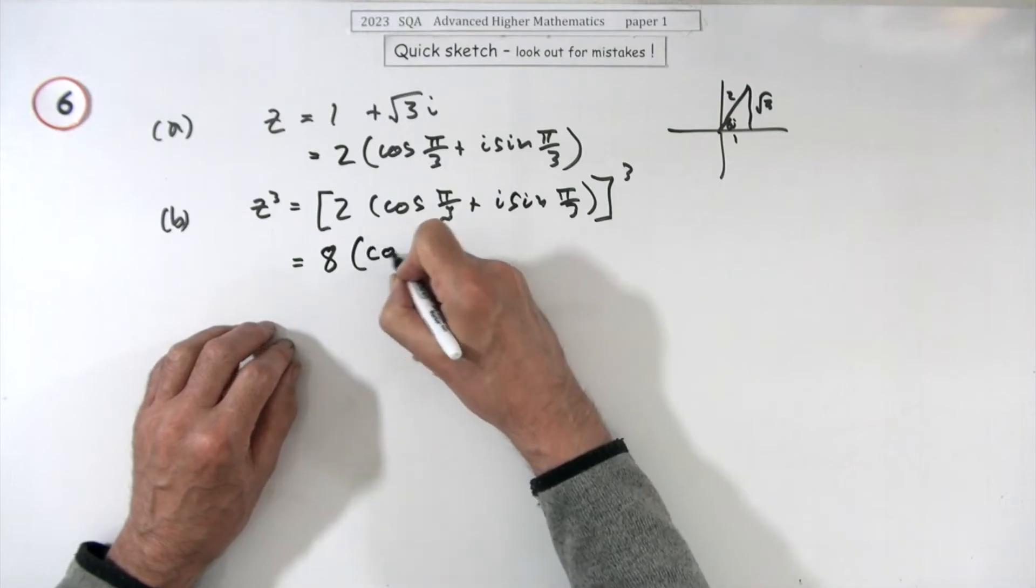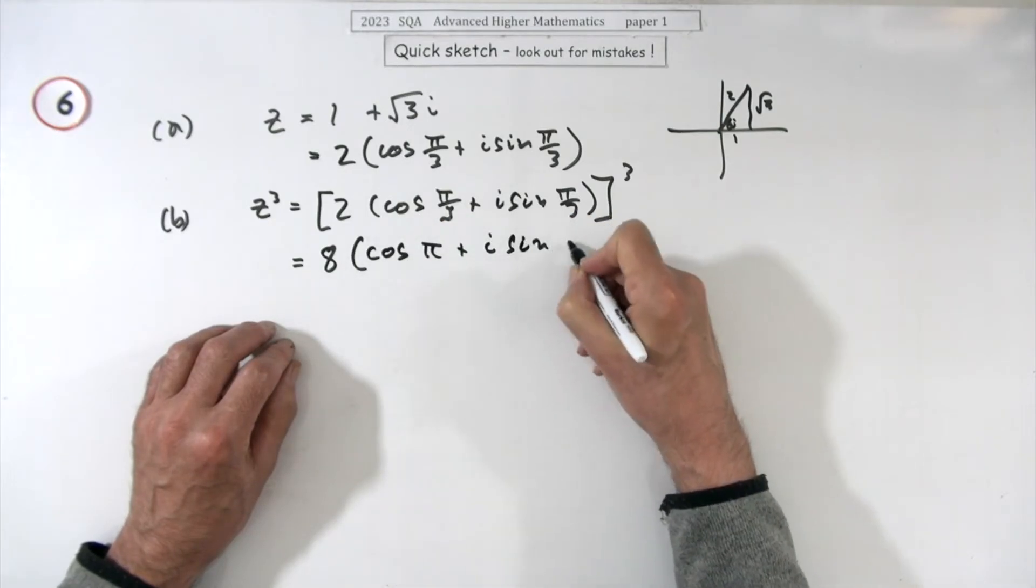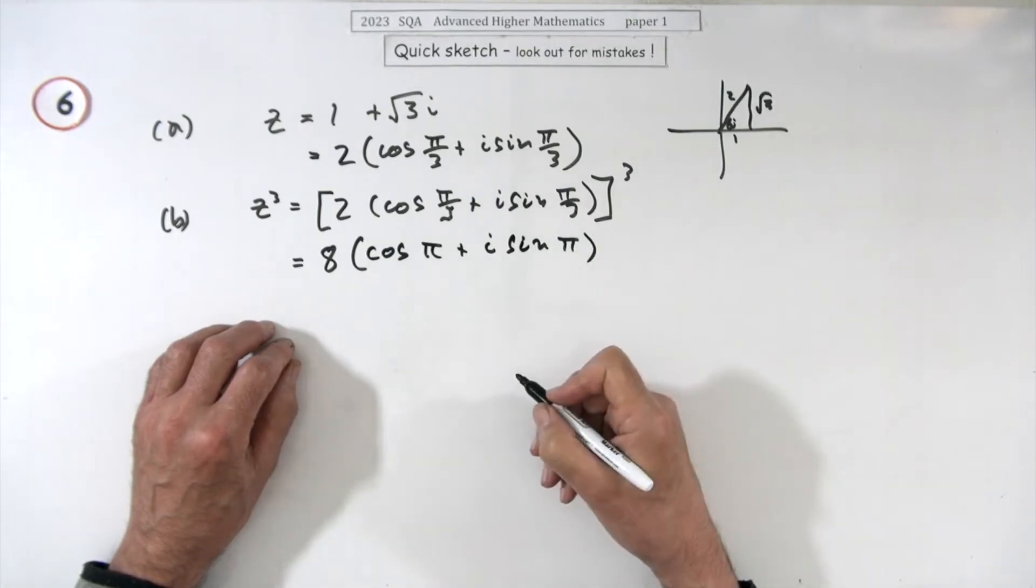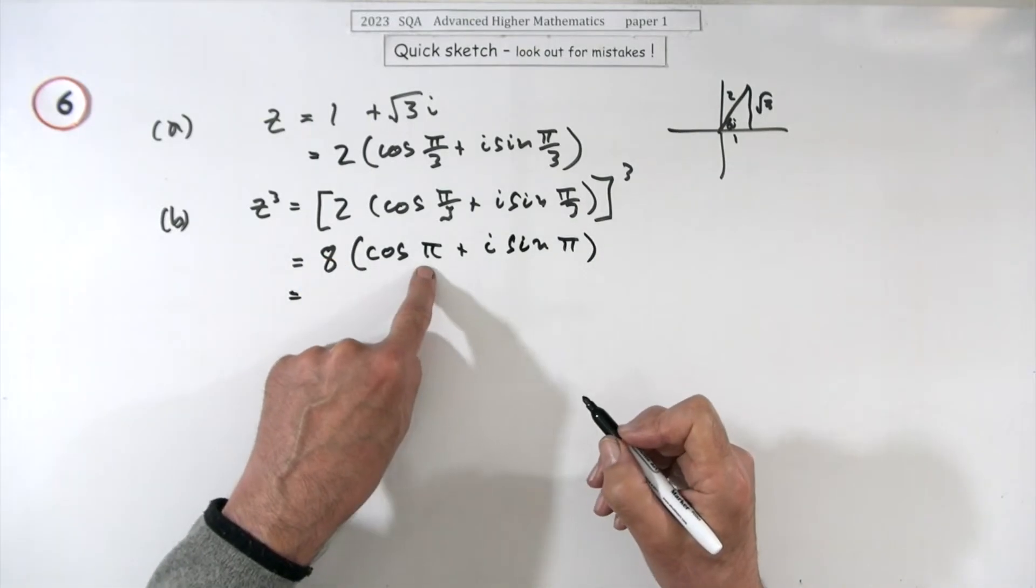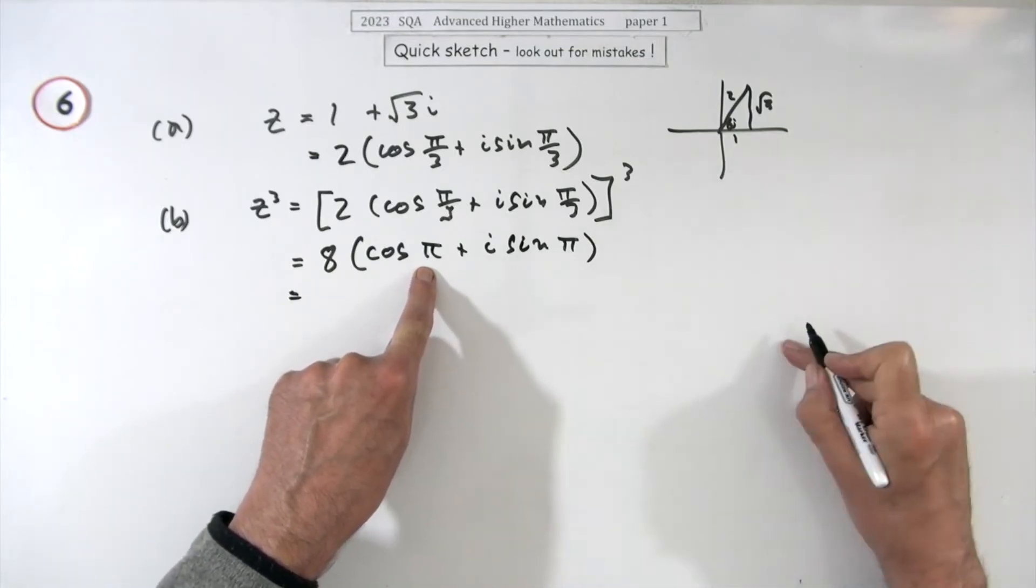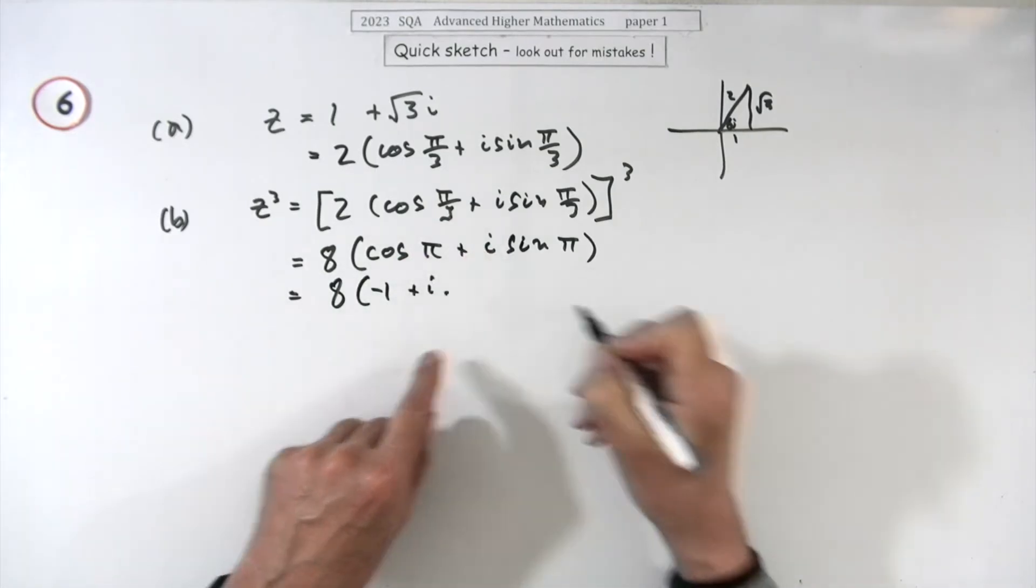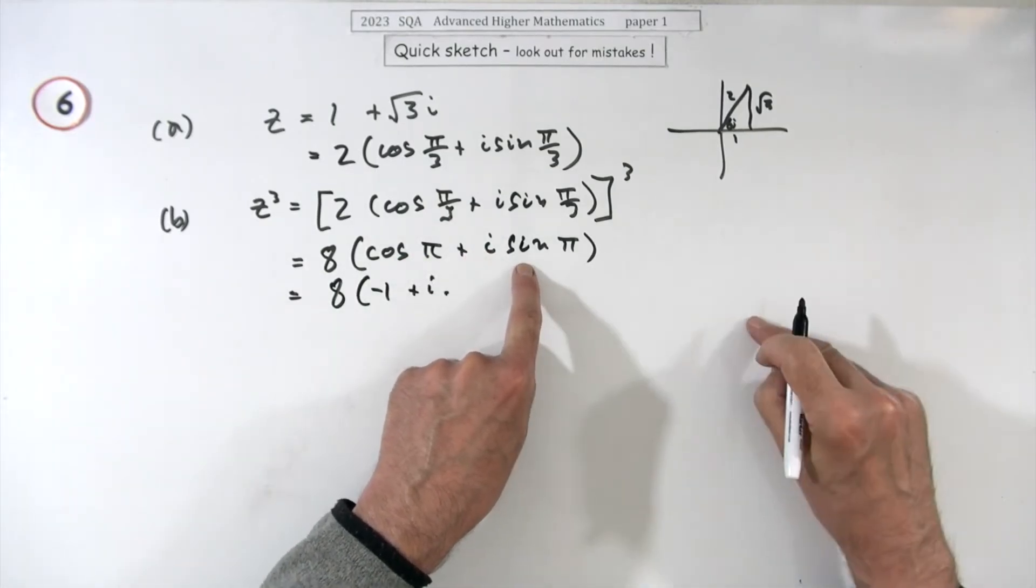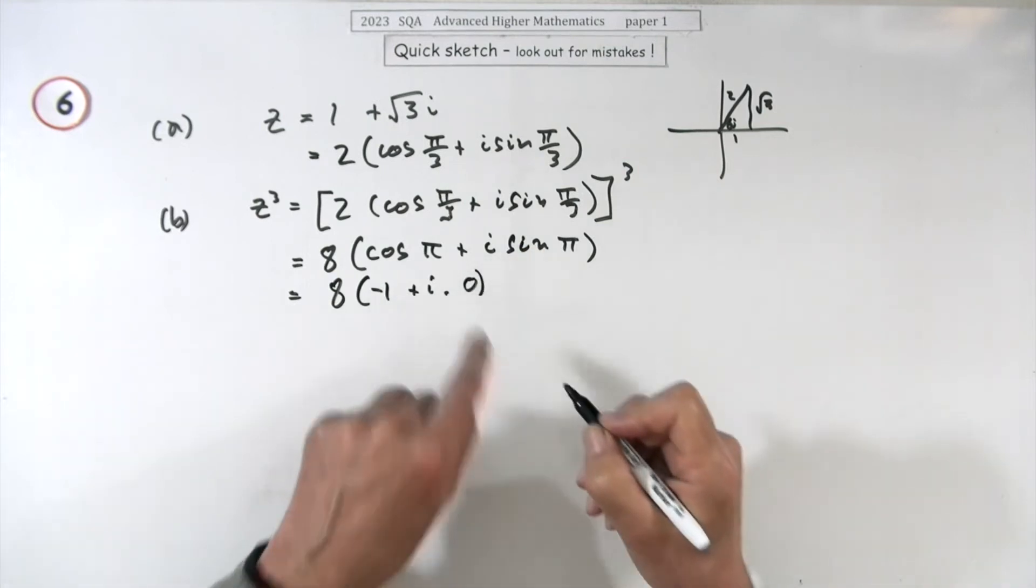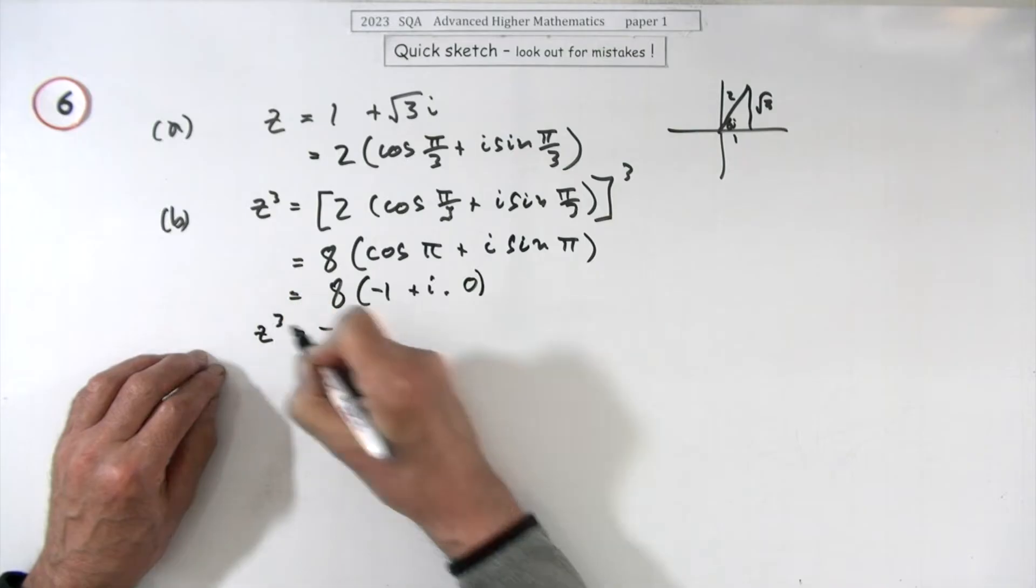So it'll become cos π plus i sine π, multiplying it out, and then just evaluating it. Because the cos of π, the cos of 180, is negative one, plus i times the sine of π is zero. So the imaginary part is gone, so that just produces a real number. Z cubed is negative eight.